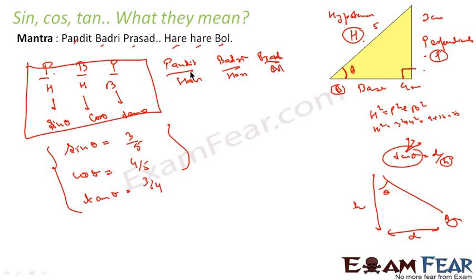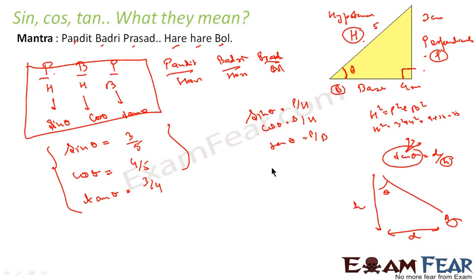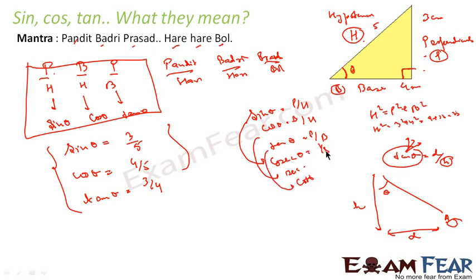Once we learn this, we can solve a lot of questions in trigonometry. This is the basic building block of trigonometry: sin theta equals P by H, cos theta equals B by H, and tan theta equals P by B. Also, we have the opposite of sin which is cosec, opposite of cos is sec, and opposite of tan is cot theta. Cosec theta equals 1 by sin theta, sec theta equals 1 by cos theta, and cot theta equals 1 by tan theta.